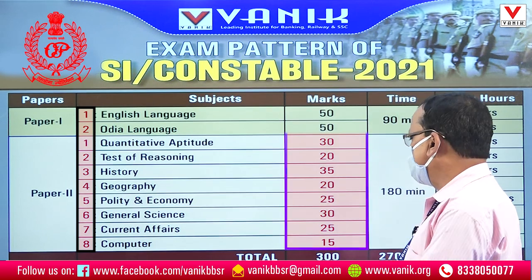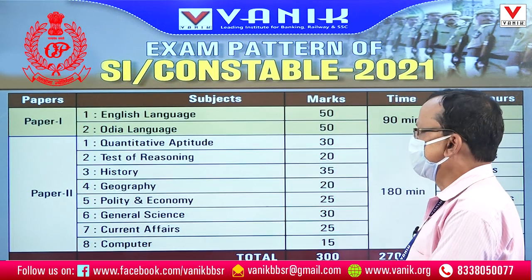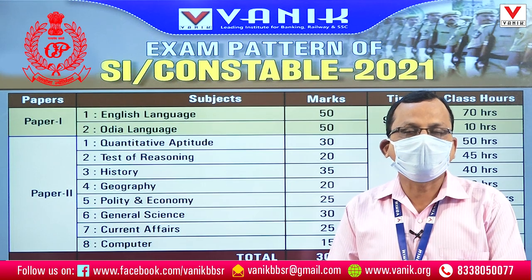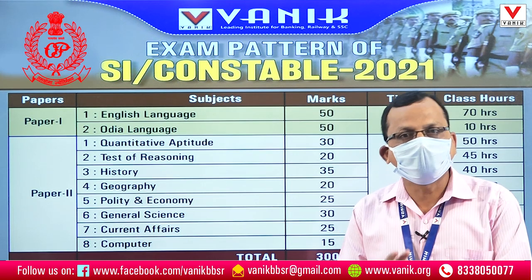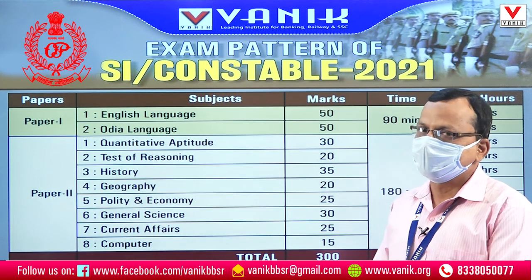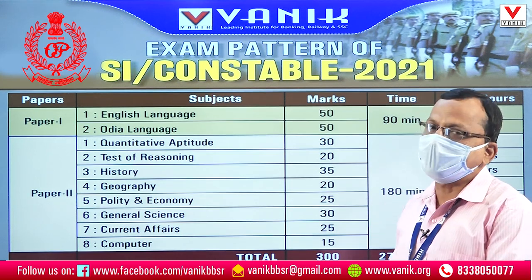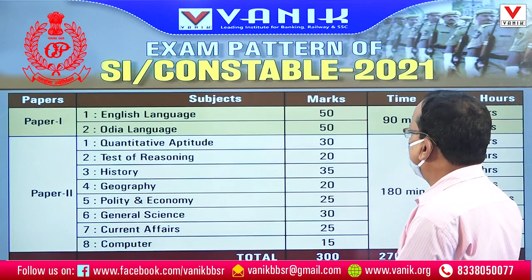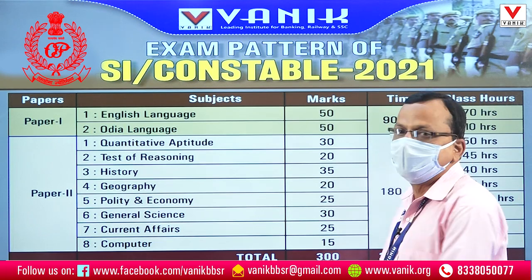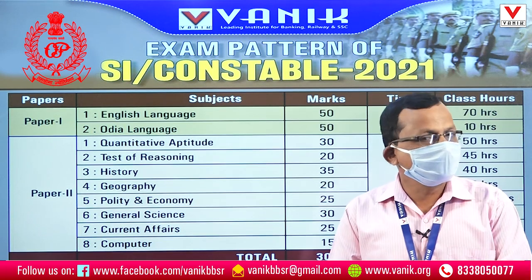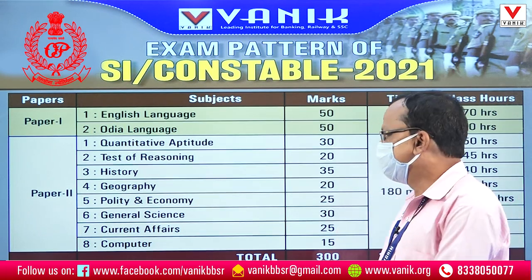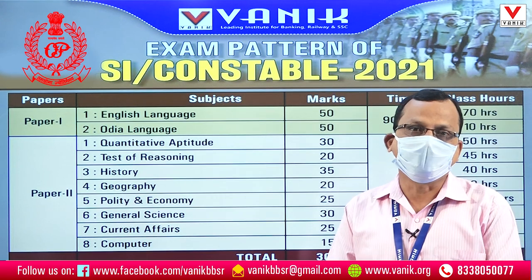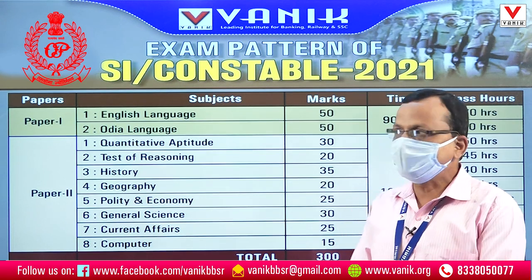So the total is 200 marks. Paper 1 is 100 marks, Paper 2 is 200 marks. What is the time distribution? Paper 1 is 30 minutes, Paper 2 is 180 minutes.